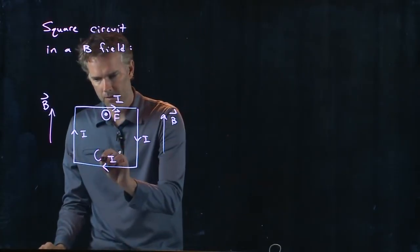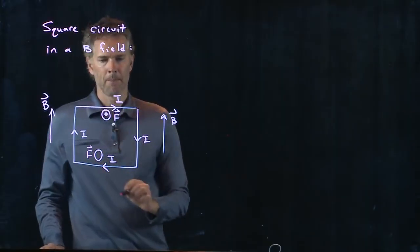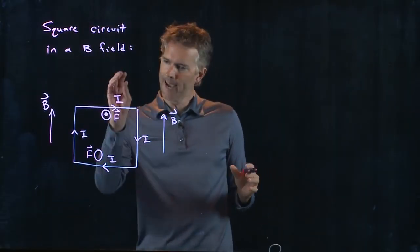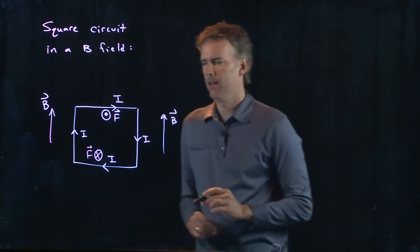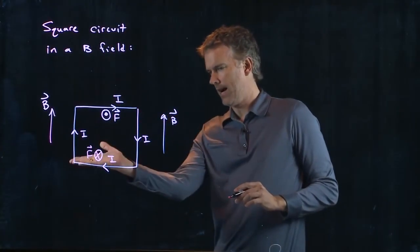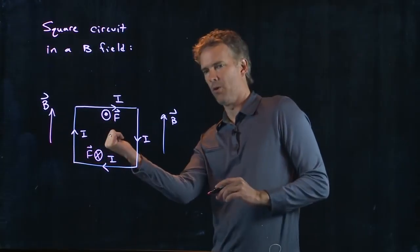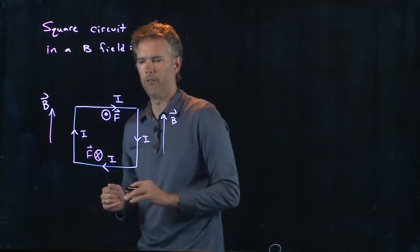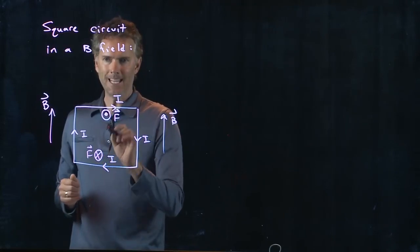What about this side? The force on this side has to be just the opposite of what we just did. We got a dot, this one has to be an X. Let's confirm. I is going to the right, B is going up. My thumb is going into the screen. So you get a force that is right there with an X into the screen.